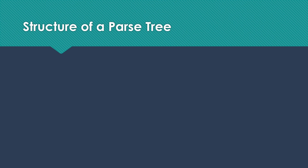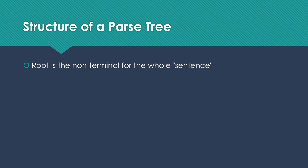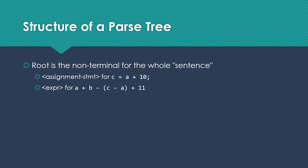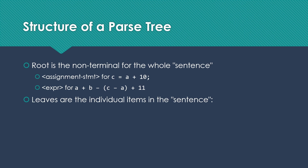The parse tree shows us how the grammar can be matched to those sentences. The root of the tree is the non-terminal for the whole sentence. For C is assigned A plus 10, the root is assignment statement. For a parse tree of just A plus B minus C minus A plus 11, the expression non-terminal is the root. The leaves of the tree are always the individual tokens — the terminals. For C is assigned A plus 10, you have five terminals: C, the equal sign, A, the plus sign, and 10.